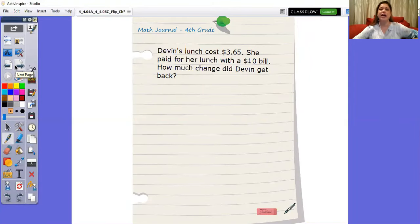Now let's take a look at this. Let's say you have a word problem. This one says: Devin's lunch cost three dollars and 65 cents. She paid for her lunch with a ten dollar bill. How much change did Devin get back? Well, if I'm thinking about this problem, it seems that Devin only bought one item, so that's okay.